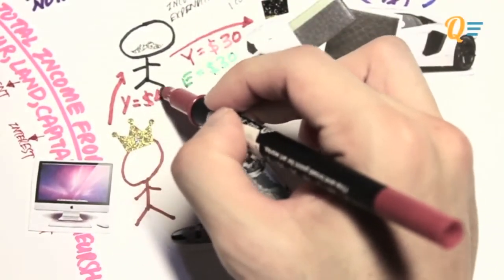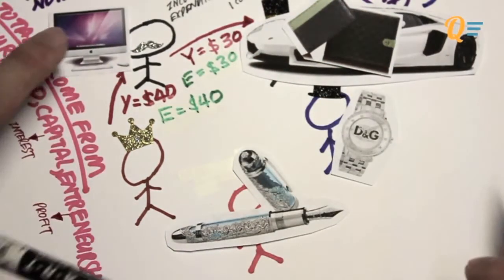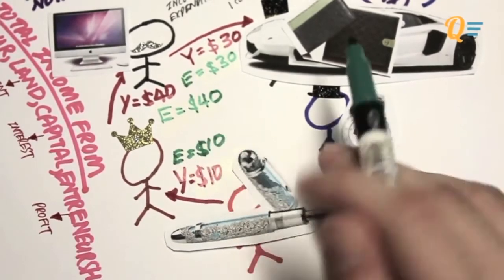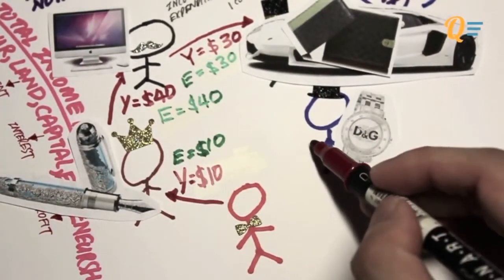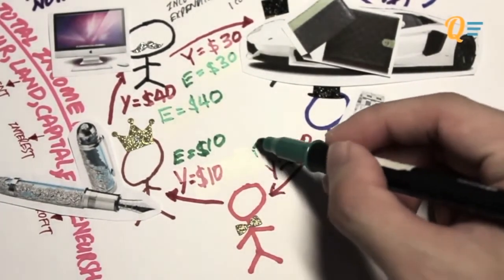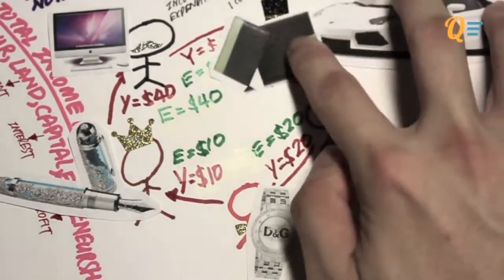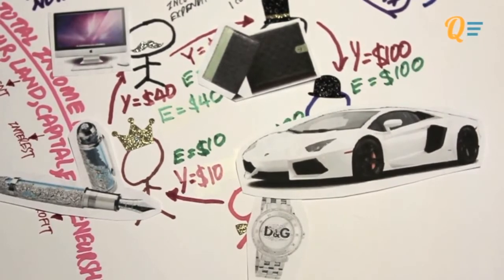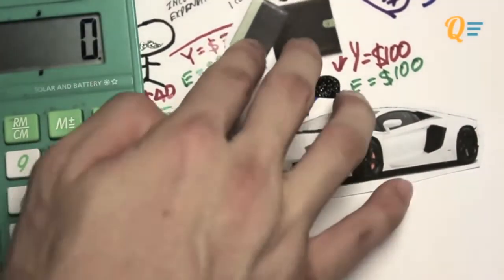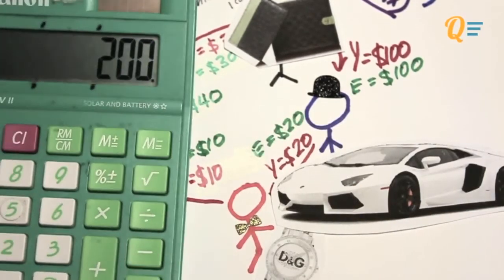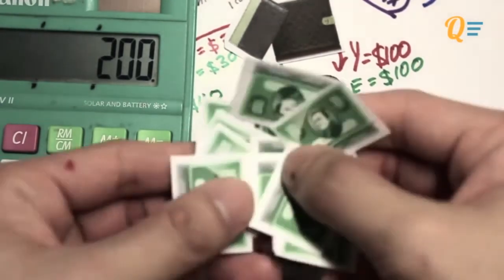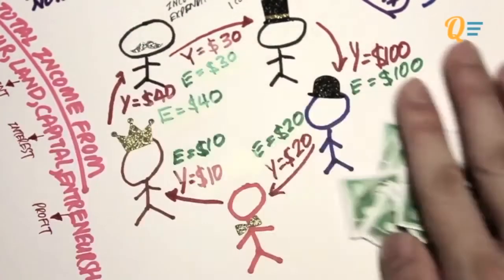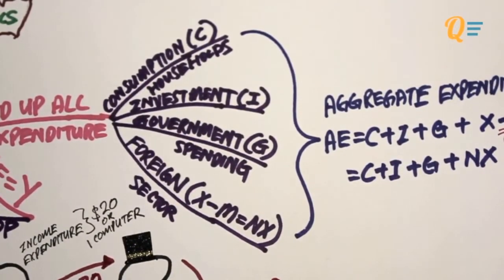Adding more people to the economy: we have people producing wallets, computers, fancy pants, watches, and cars. The wallet guy sells his wallet to the car guy for $30 — income to him is $30, and the car guy spends $30. Going around the circle: the computer is sold for $40, a pen for $10, a watch for $20, and a car for $100. Adding all these figures gives your nominal GDP. The real GDP is the five goods themselves.